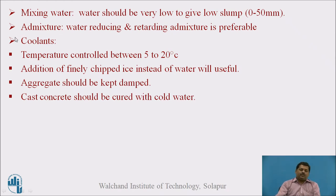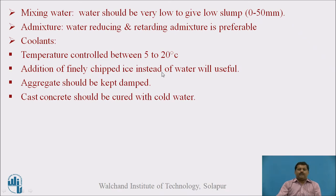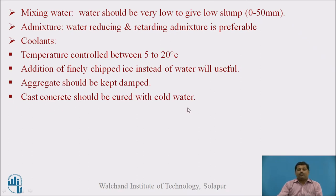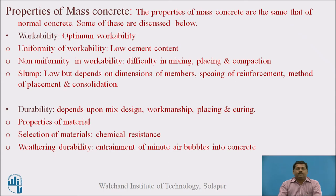Coolants are used for temperature control — the temperature must be maintained between 5 to 20 degrees Celsius. Addition of finely chipped ice instead of water can be used so that the concrete temperature can be kept constant. Aggregates should also be kept damp, which will also reduce the temperature. Additionally, cast concrete should be cured with cold water.